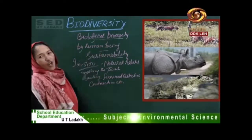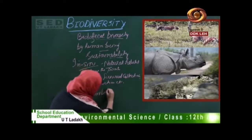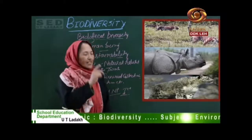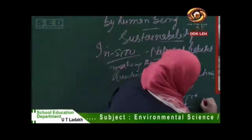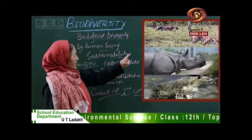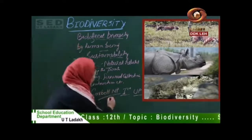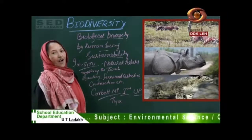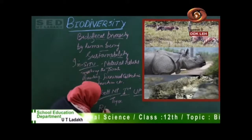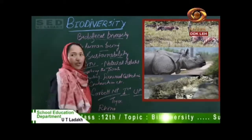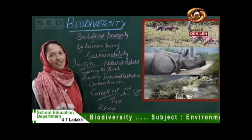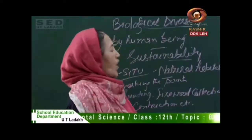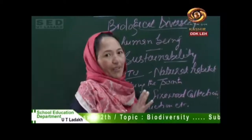For example, Corbett National Park is the first national park of India, located in Uttar Pradesh, and is famous for the conservation of the tiger. Kaziranga National Park in Assam is famous for the one-horned rhino. Hemis National Park is where you can find the snow leopard, which is found in our own Ladakh.